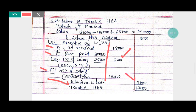Actual HRA received is Rs 18,000. The exemption is Rs 5,000. Therefore, taxable HRA is Rs 13,000.